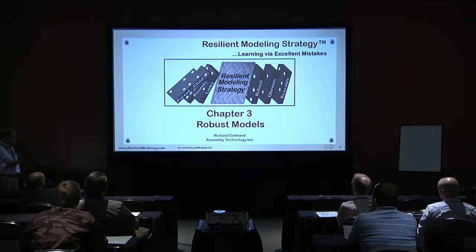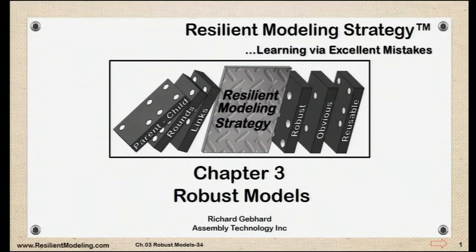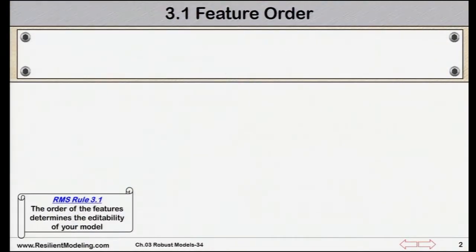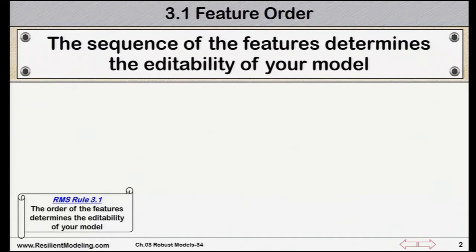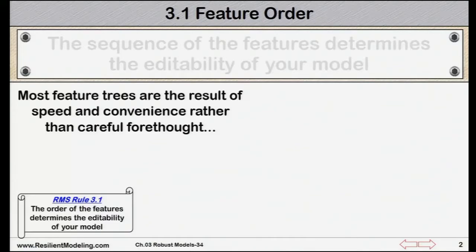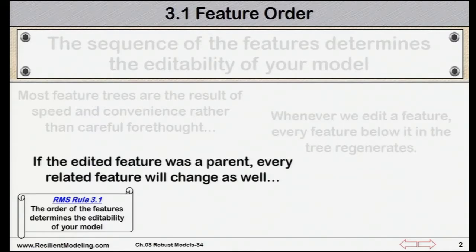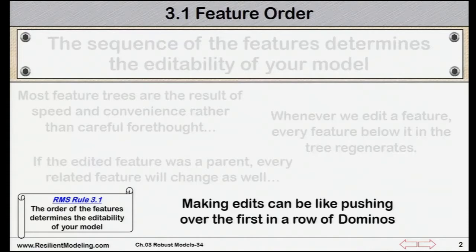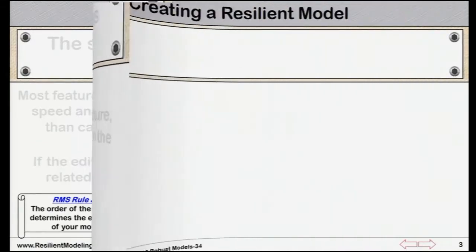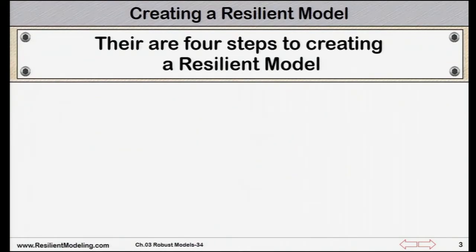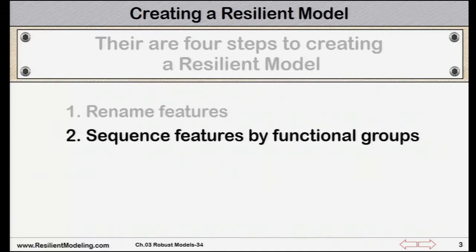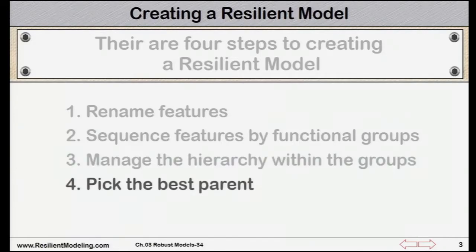In the previous chapter we learned how to create obvious models. In this chapter we'll look at how the order of features completely controls the editability of your model. Most feature trees are the result of modeling rather than careful forethought. Whenever we edit a feature, every feature below it in the tree regenerates. If the edited feature is a parent, every related feature will change as well, and then those features' children will be affected. Making edits can be like pushing over the first in a row of dominos. There are four steps to creating a resilient model: rename features, sequence features by functional groups, manage the hierarchy within the groups, pick the best parent.